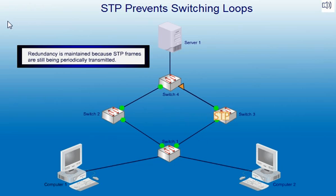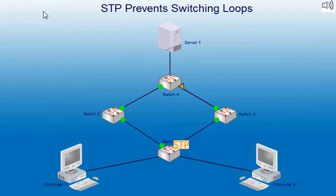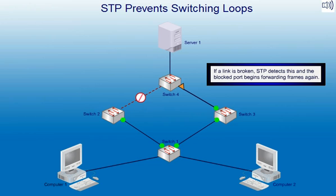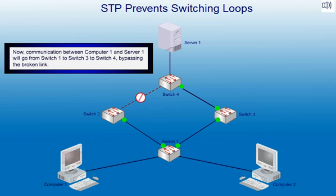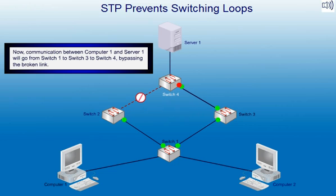Redundancy is maintained because STP frames are still being periodically transmitted. If a link is broken, STP detects this, and the blocked port begins forwarding frames again. Now, communication between Computer 1 and Server 1 will go from Switch 1 to Switch 3 to Switch 4, bypassing the broken link.